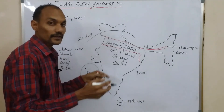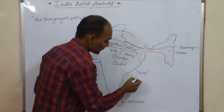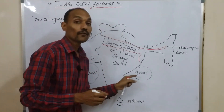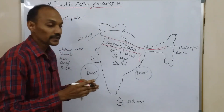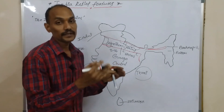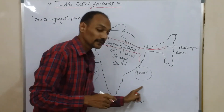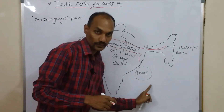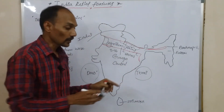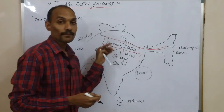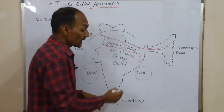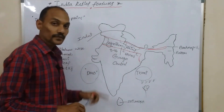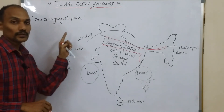The Terai region had thick forests and a variety of wildlife. During the partition of India, when India was divided into India and Pakistan, the government cleared these forests for agriculture. Many migrants who came to India from Pakistan were settled in this region, and the forests were cleared to develop agricultural land for them.